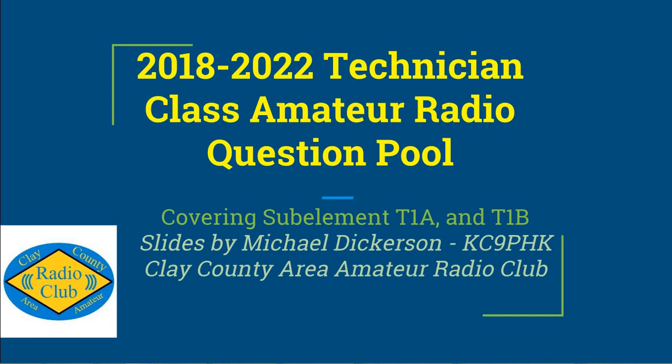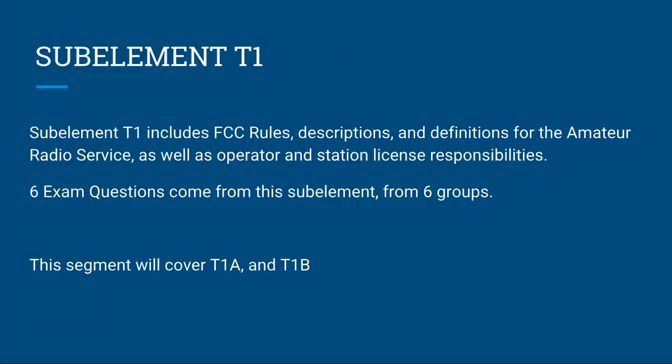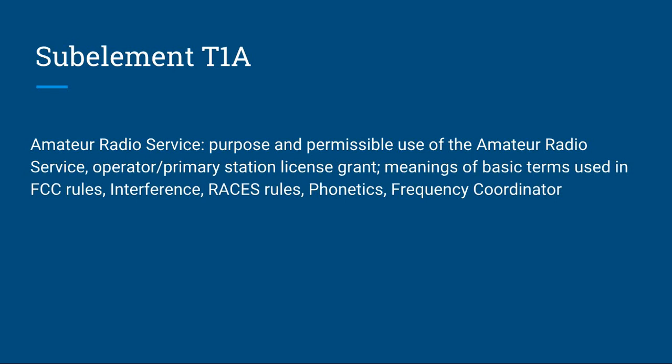Today's topic is sub-element T1A and T1B. Sub-element T1 includes the FCC rules, descriptions, and definitions for the amateur radio service, as well as operator and station license responsibilities. Six exam questions come from this sub-element from the six groups. T1A covers the amateur radio service purpose and permissible use, operator and primary station license grant, basic terms used in FCC rules, interference, FCC RACES rules, phonetics, and frequency coordinators.